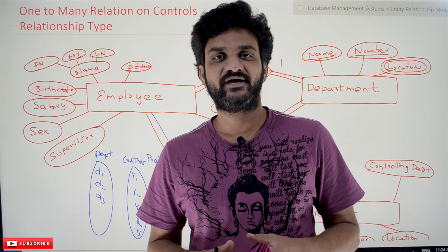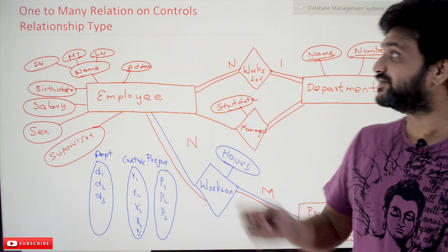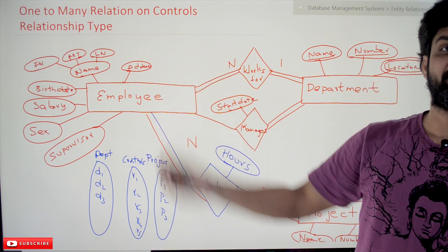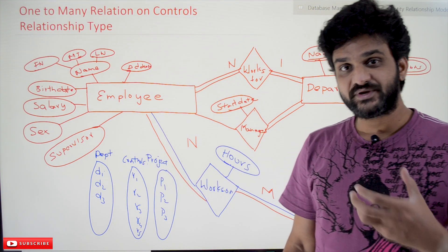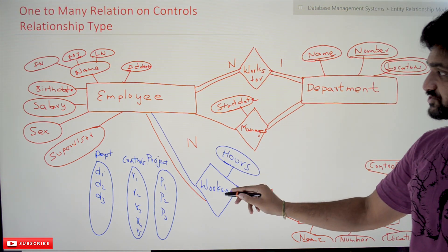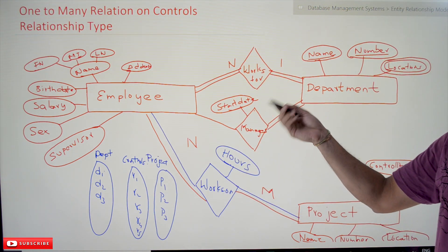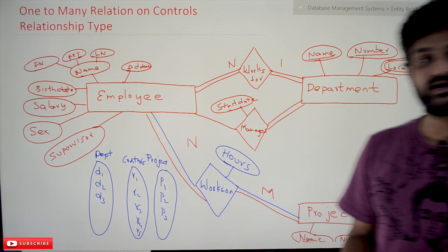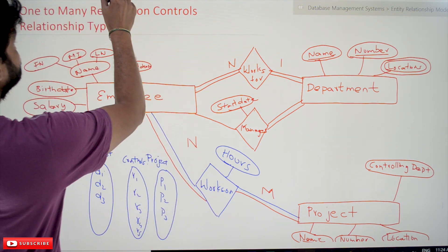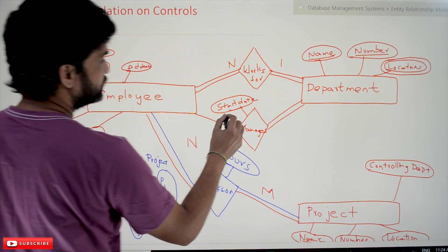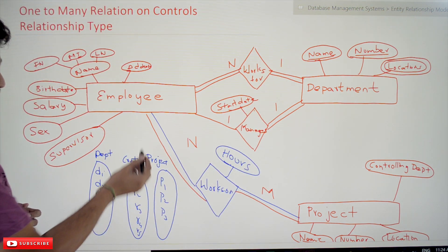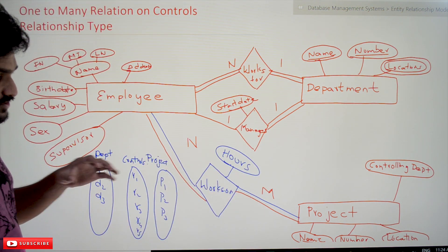Hi, welcome to Learning Monkey. I am Vikram. In this class we'll try to understand one-to-many relationship on the 'controls' relationship type. So far in our previous classes we have covered all these relationship types: works for, manages, works on. Some of them are one-to-one, this is one-to-many, and this is many-to-many relationship type.